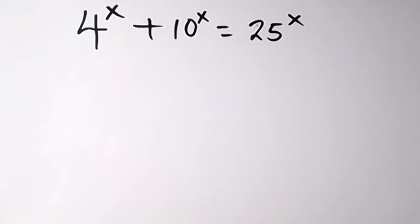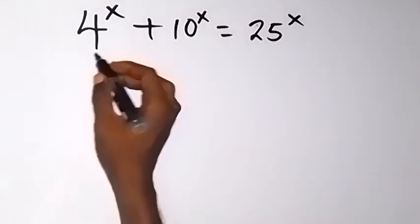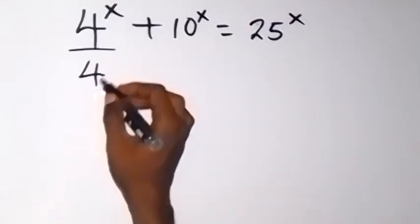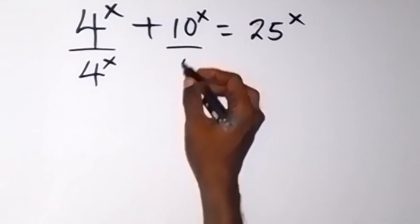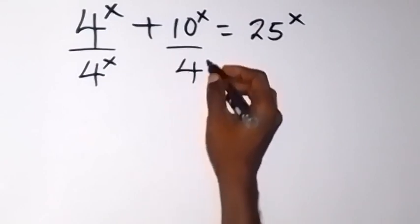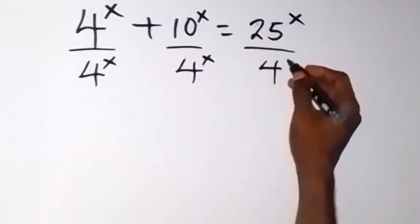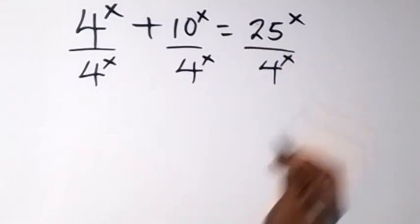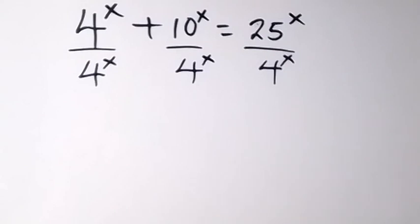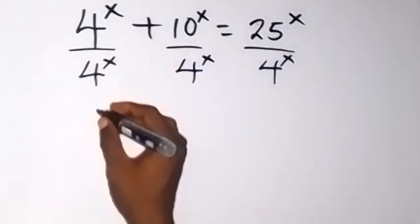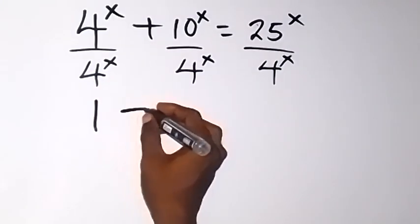When we solve this problem, we can divide through by 4x. We divide through by 4x. And from here, 4 raised to power x can cancel each other, and that gives us 1. So we have 1 left plus.